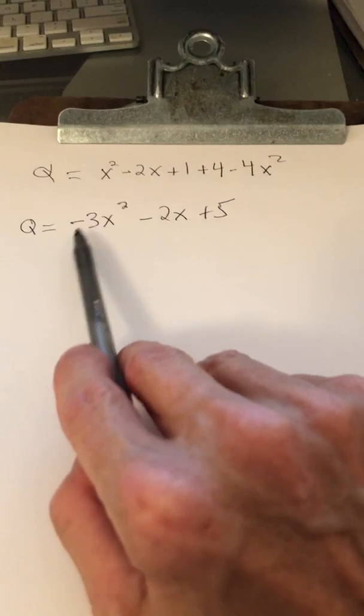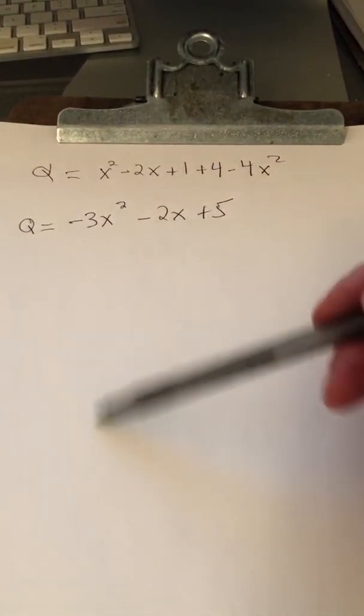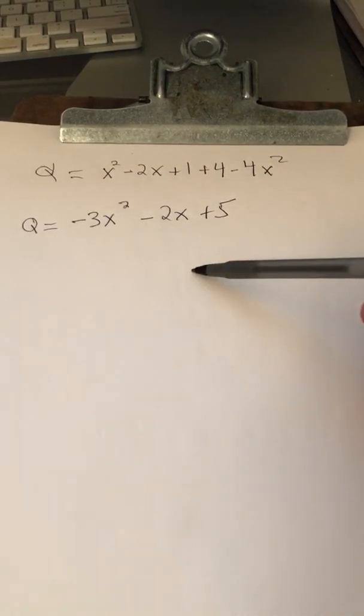Now, you should realize that this is a quadratic function, and the coefficient of x squared is negative, so this is a parabola pointing downwards, so we do indeed have a maximum. That's important.